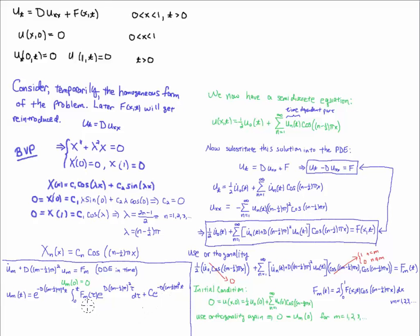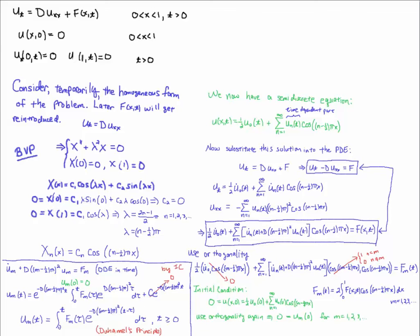Having solved this initial value problem, the solution has a particular part and a homogeneous part, which you may recall from a previous video on Duhamel's principle. I solved this using an integrating factor: the integrating factor is e raised to the integral of the coefficient term with respect to t. Multiplying through and integrating both sides yields the solution. Plugging in t = 0, the integral vanishes, the exponential becomes 1, and by the initial condition c = 0. The exponential factor can be slid inside the integral since integration is with respect to tau, giving a factor of e^{-d[(n-1/2)π]²(t-τ)}.